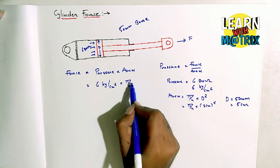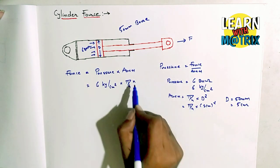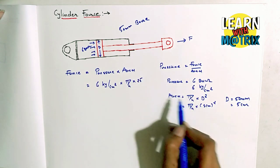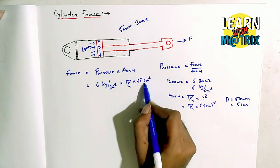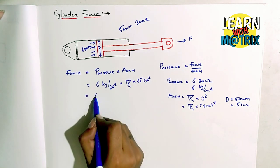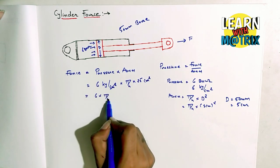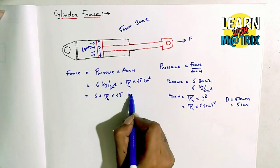into pi by 4 into 1.5 - that's 2.25 centimeter square. So centimeter square cancels, giving 6 into pi by 4 into 2.25 kg.